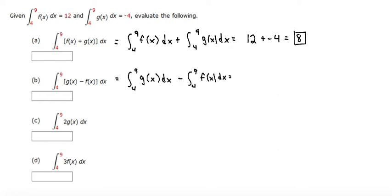Plugging in negative 4 for the g of x integral and then minus the 12 for the f of x integral, we have negative 4 minus 12, which is negative 16.